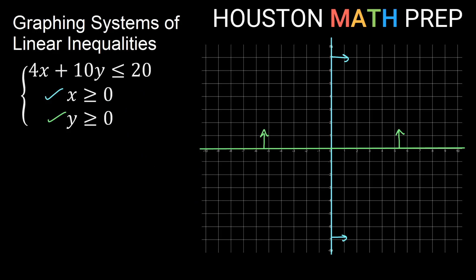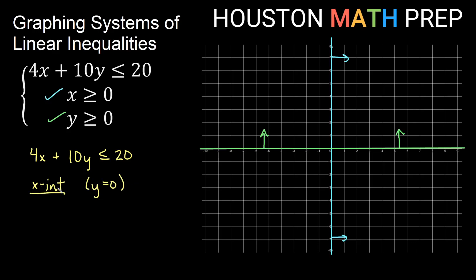Going back to 4x plus 10y less than or equal to 20, let's find the intercepts. For the x-intercept, set y equal to 0, giving 4x equal to 20. Dividing by 4, we get x equal to 5. So our x-intercept is 5.